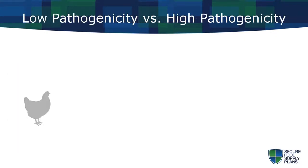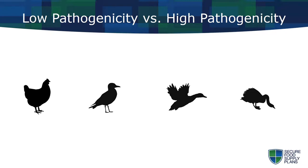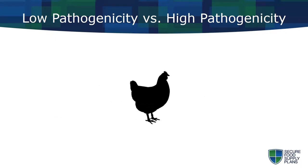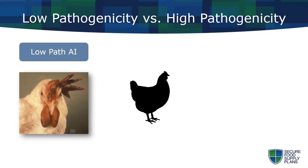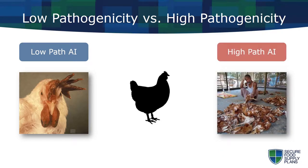Particularly in birds, different influenza strains can be highly variable in their ability to produce disease. Typically, outbreak strains of avian influenza are categorized as either low-pathogenicity AI, causing relatively mild disease in domestic poultry, or high-pathogenicity AI, causing severe disease in domestic poultry. Some strains of high-path AI can result in mortality of entire birdhouses in a matter of one or two days.